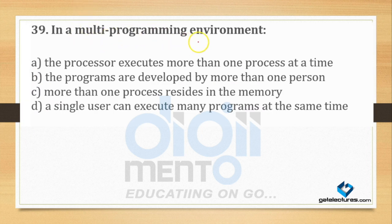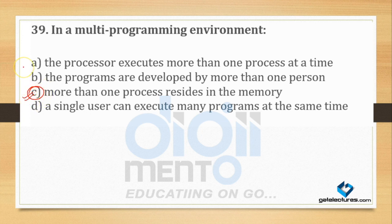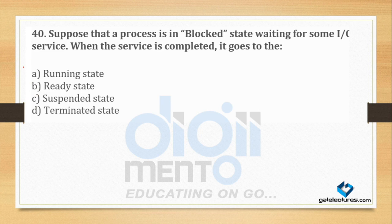Question number 39: What happens in a multi-programming environment? The options are: the processor executes more than one process at a time, the programs are developed by more than one person, or more than one process resides in memory. We have seen many times — in multi-programming, more than one process resides in memory.